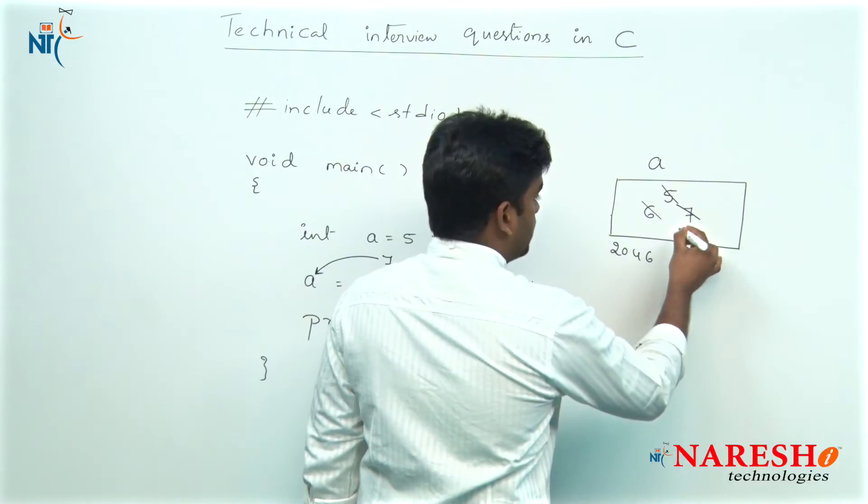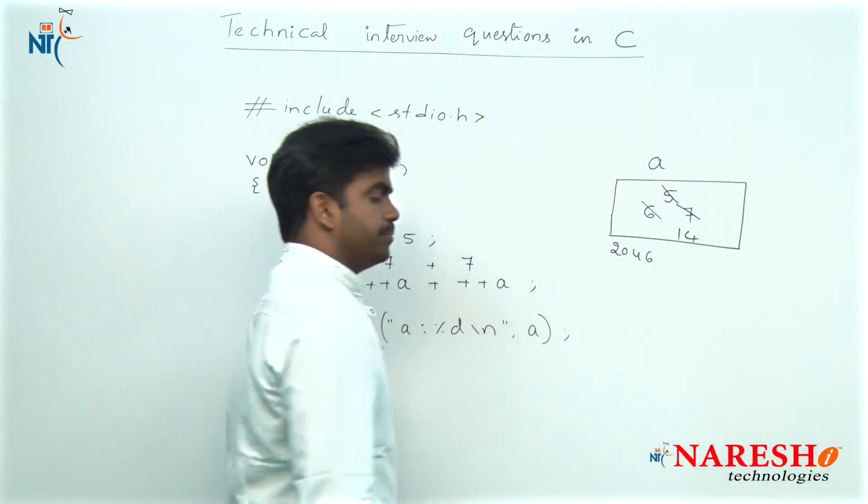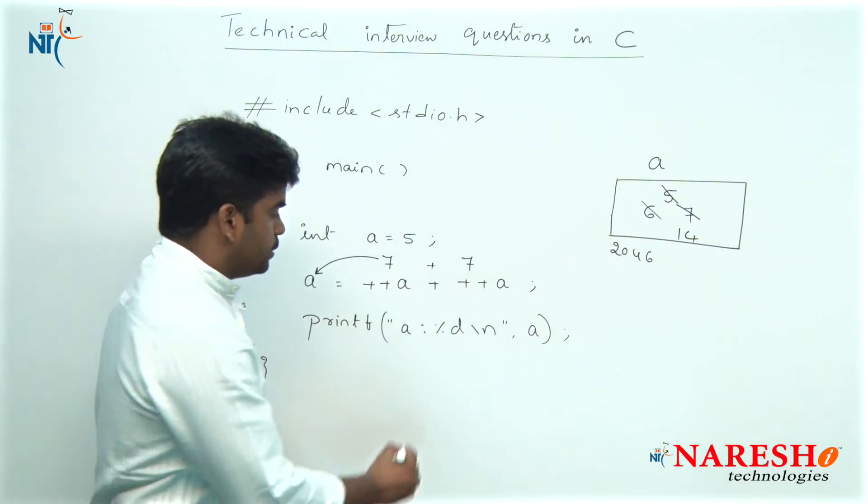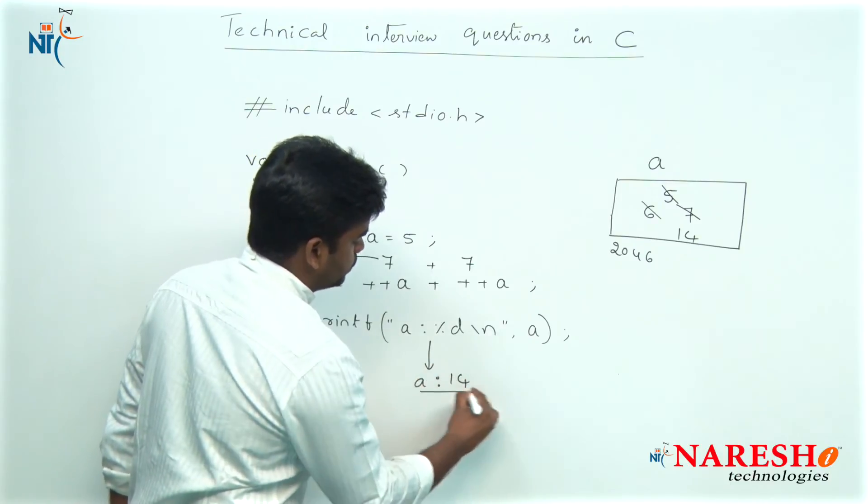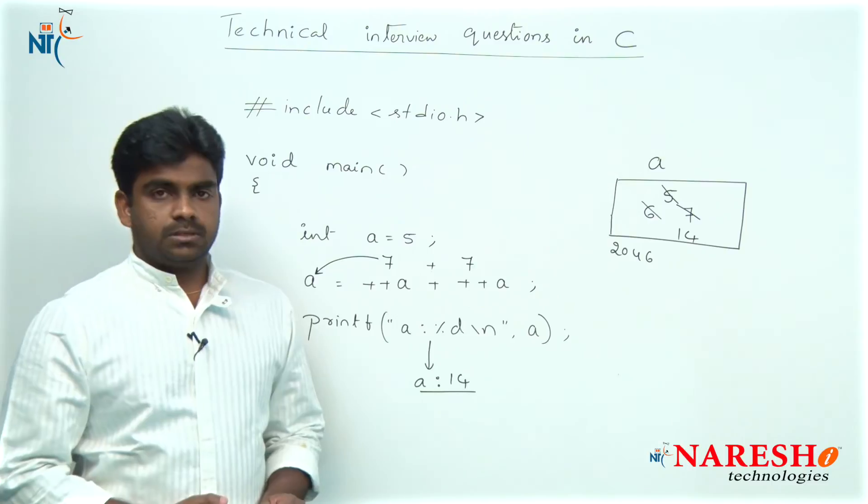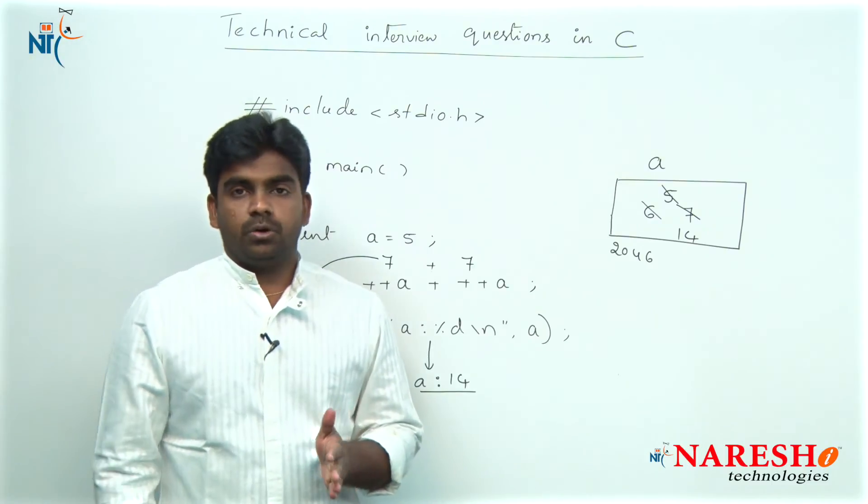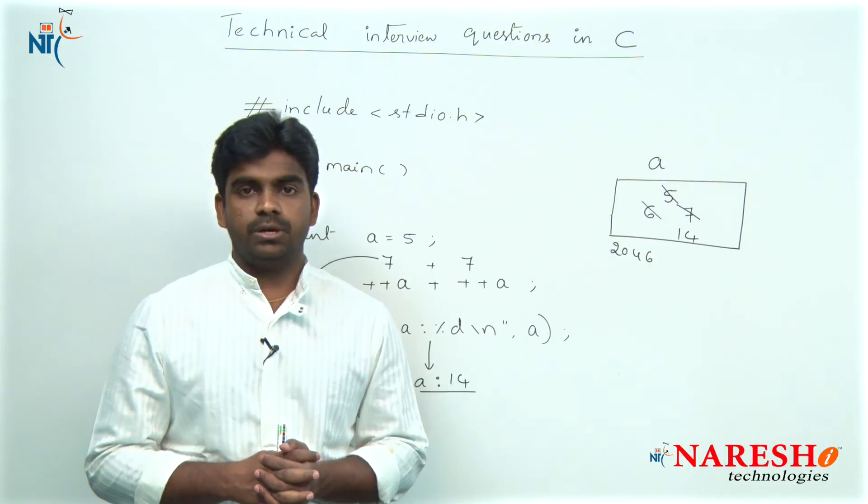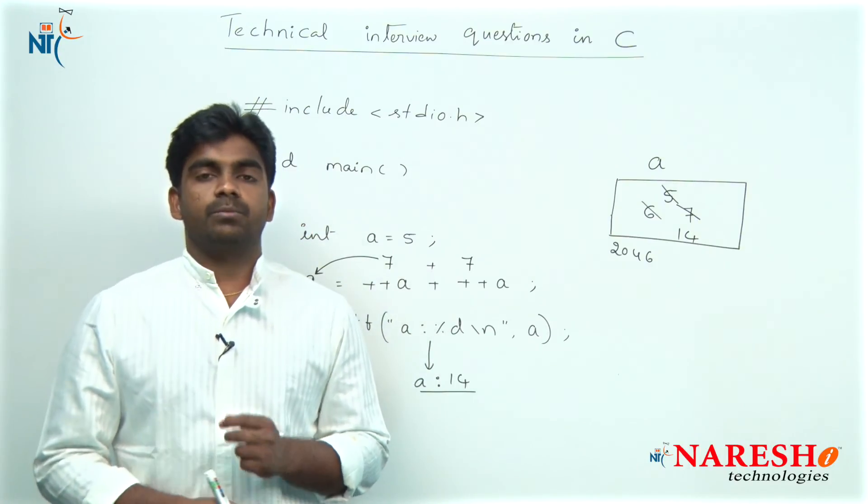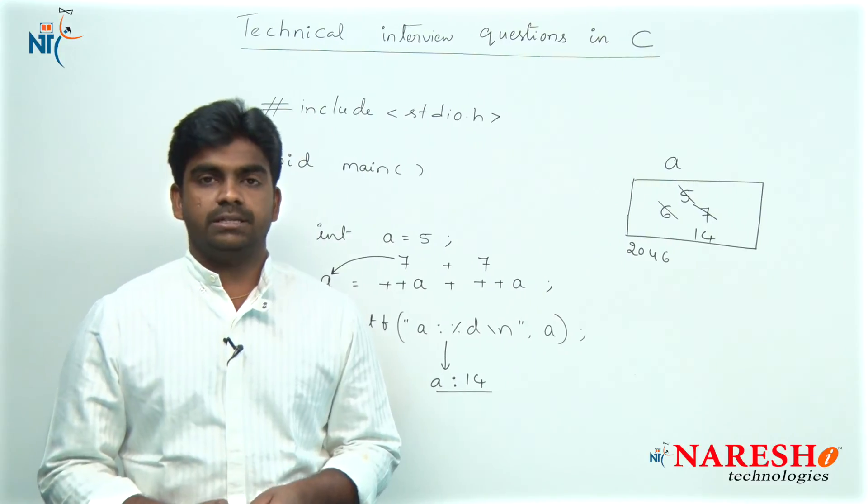Here a value is 14, that 14 value will be printed here. So it will print that output, a value is 14, this is output. And this is how the pre-increment operators execute in the expression. Hope you understood, for more videos please subscribe to NARESH IT channel. Thank you.